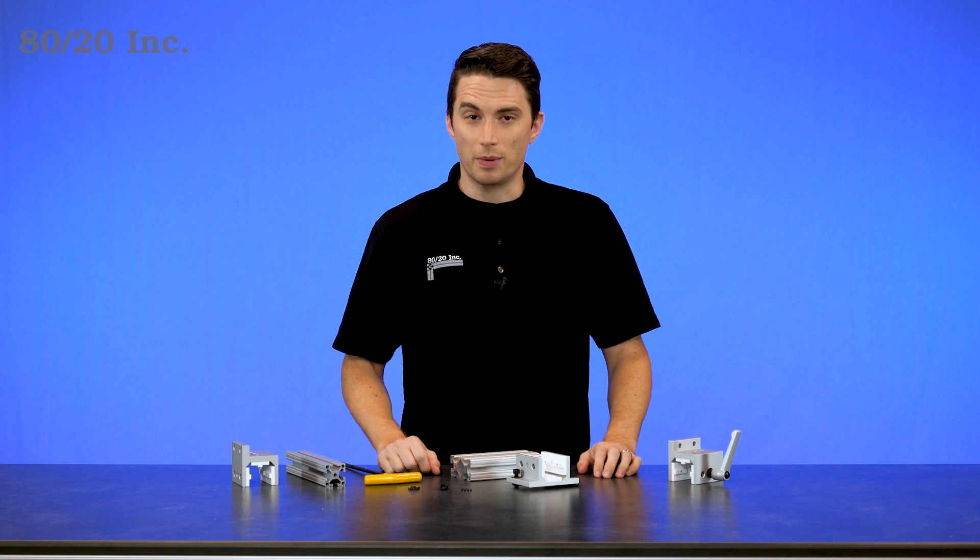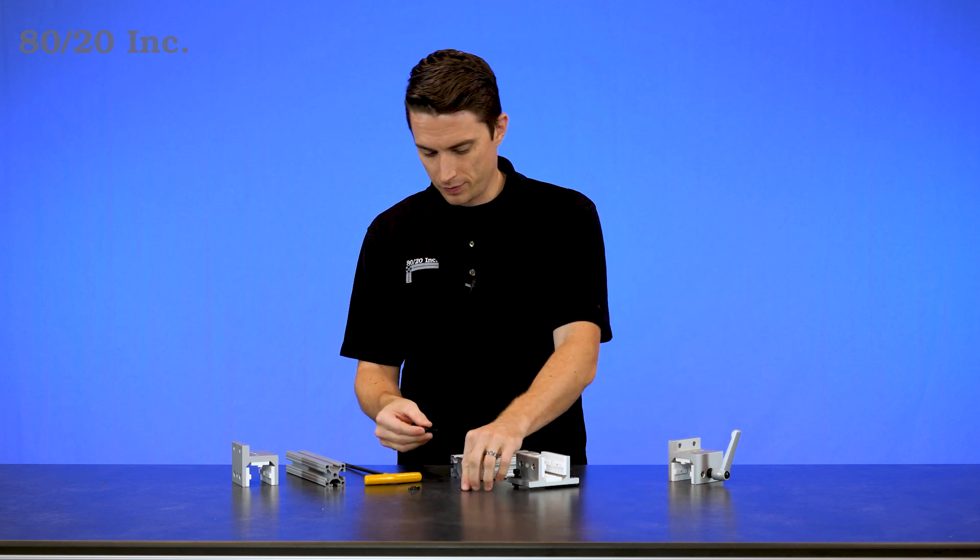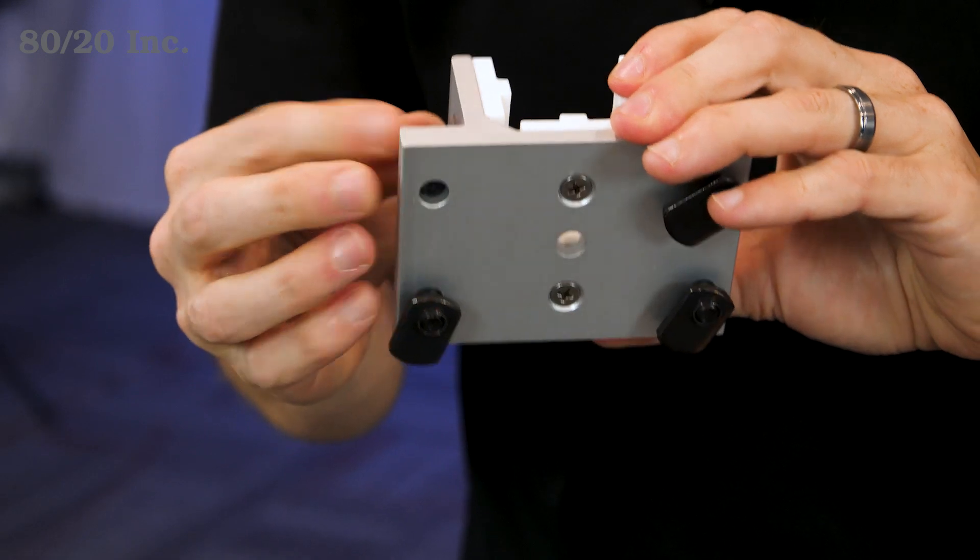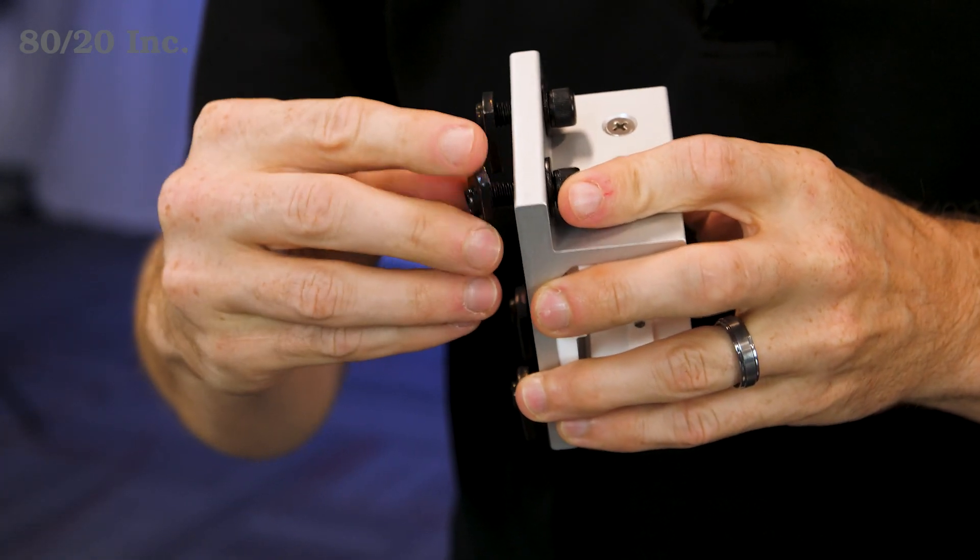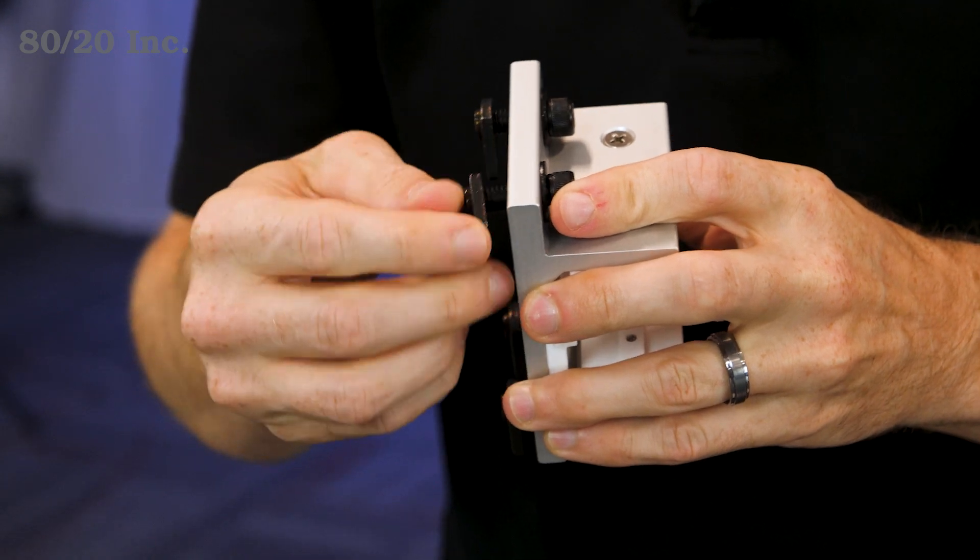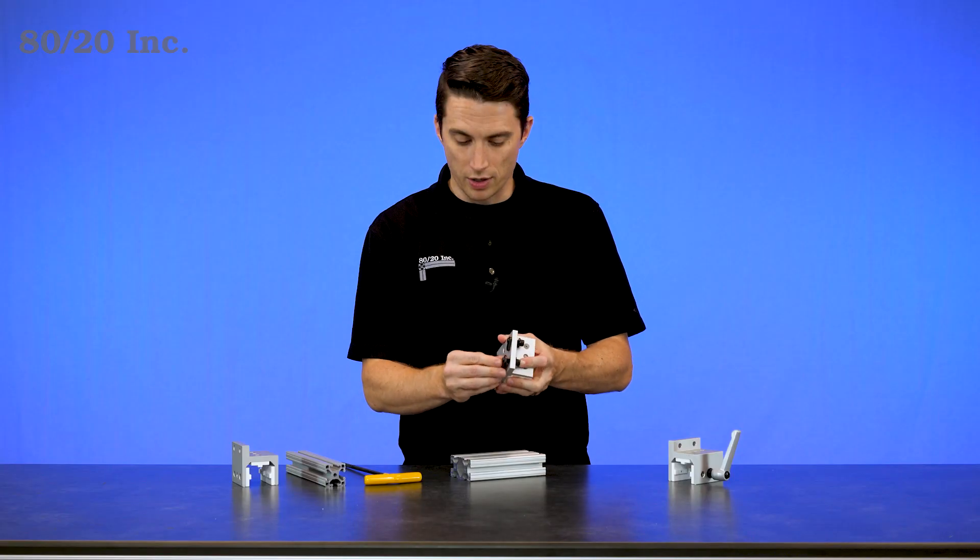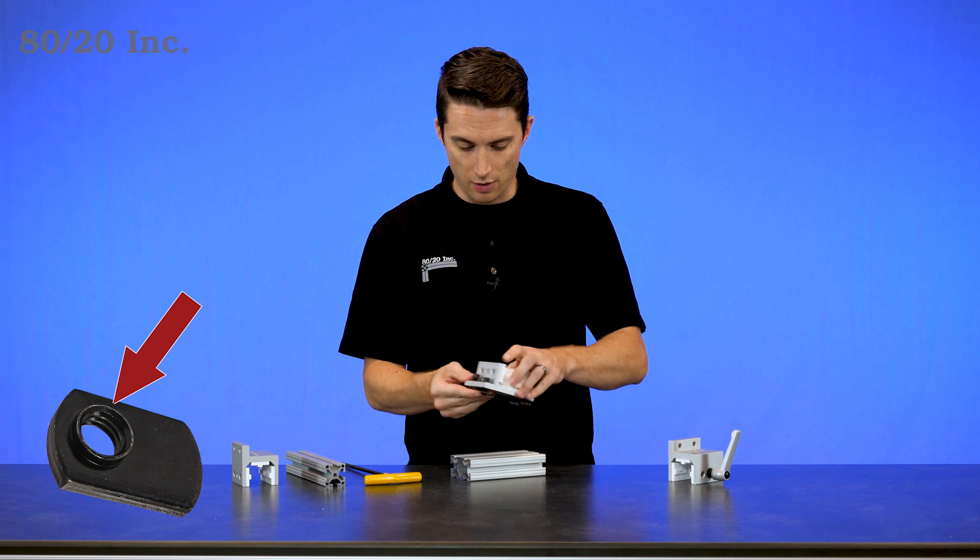Now when it comes to installing the bearing, we're going to take our bolt, take our washer, and feed those through the hole on the bearing. We'll take our T-nut and preload it onto the end of the bolt. We'll want to make sure when putting the T-nut on there that the pilot projection is facing away from the bearing itself.